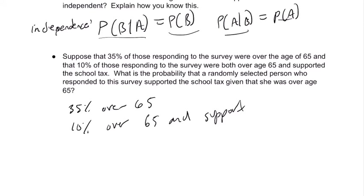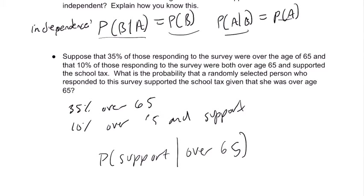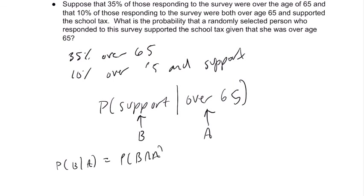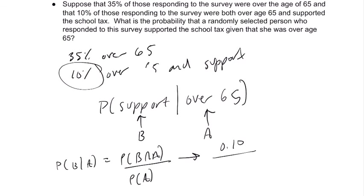We know she's over the age of 65, so we're looking for the probability that they support the school tax given that they were over 65. Let's call support B and over 65 A. The probability of B given A equals the probability of A and B over the probability of A. So we take the probability of both happening — that's 10%, or 0.10 — divided by the probability of A, which is over 65, or 0.35. That's about 28.6%, or 0.286.